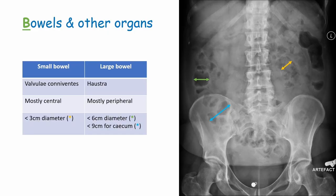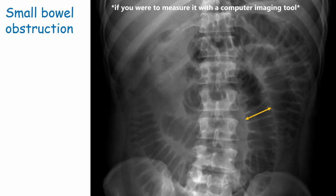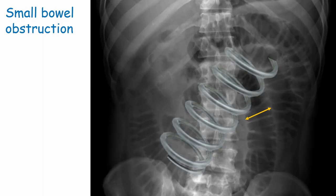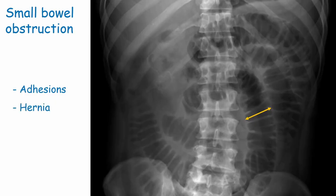We should always apply the 3-6-9 rule by checking the widest part of each bowel section to rule out obstruction. An x-ray showing small bowel obstruction will show central bowel with valvulae conniventes and a lumen over 3cm wide - sometimes referred to as a coiled spring appearance. Small bowel obstruction is most commonly caused by adhesions, where fibrous scar tissue connects tissues and organs after surgery. Other causes include hernias and cancer.